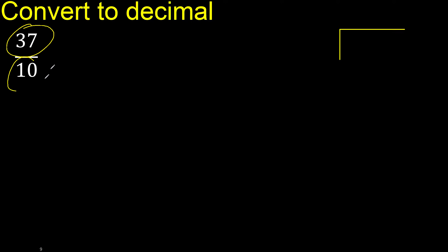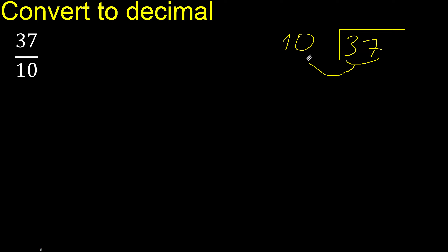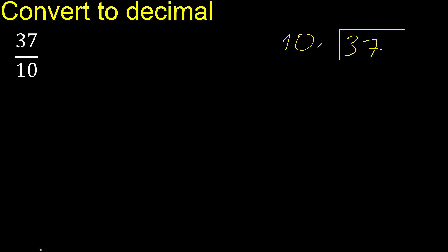37 divided by 10. 37 is not less, therefore 10 multiplied by which number is nearest to 37 but not greater. Multiply by 4 is 40 — 40 is greater. Multiply by 3 is 30 — 30 is not greater. Subtract 7.